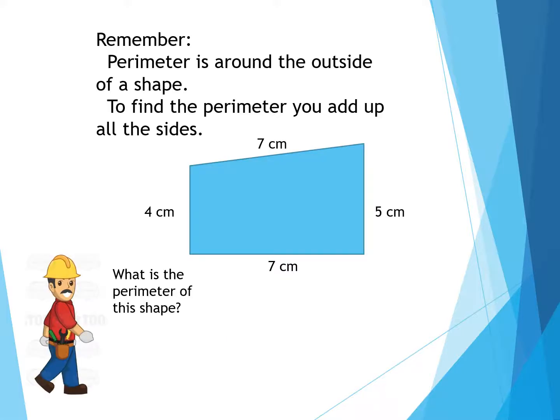Remember, perimeter is around the outside of a shape. To find the perimeter, you add up all the sides. What is the perimeter of this shape? It's your turn, and you can do it. Just add up all the sides and see if you get it right. Thanks for listening, and good luck.